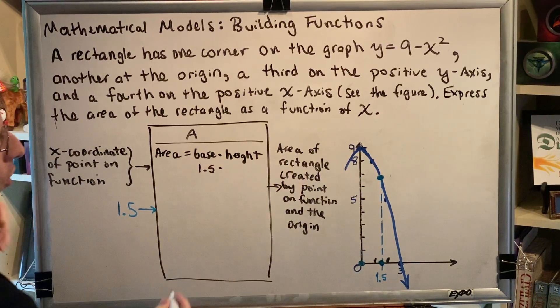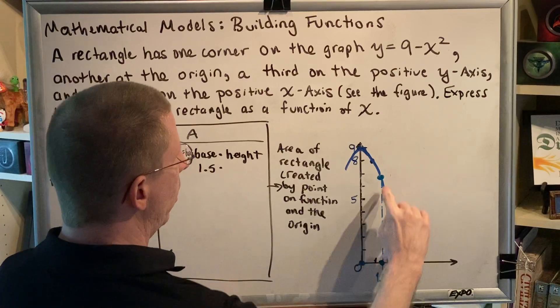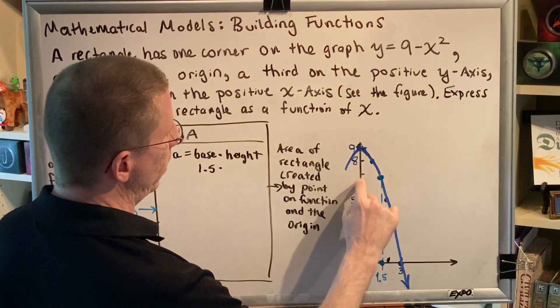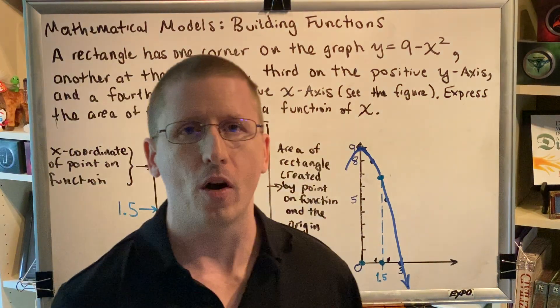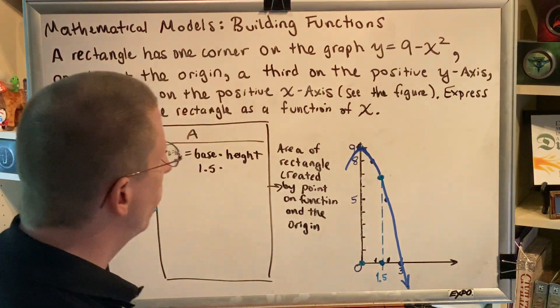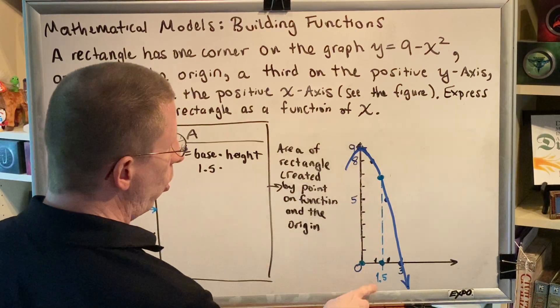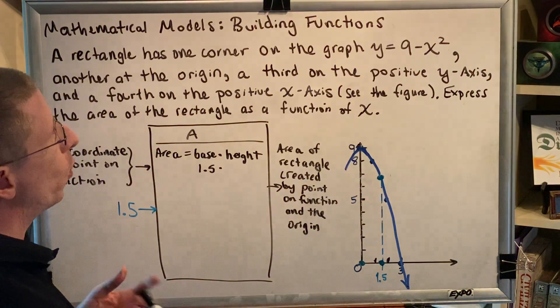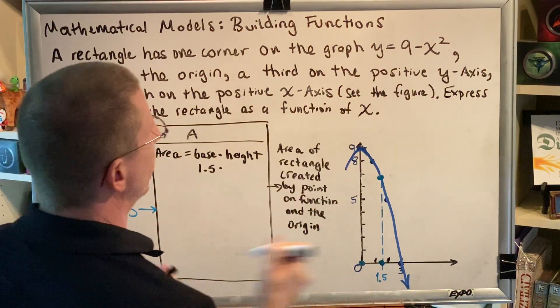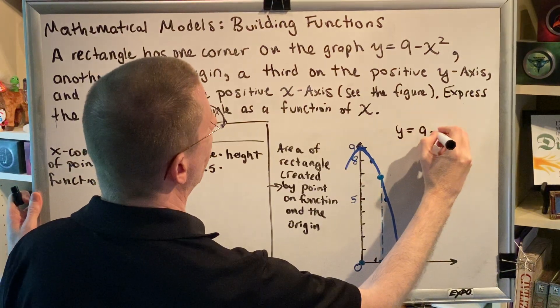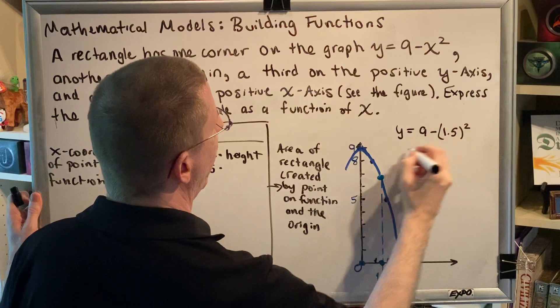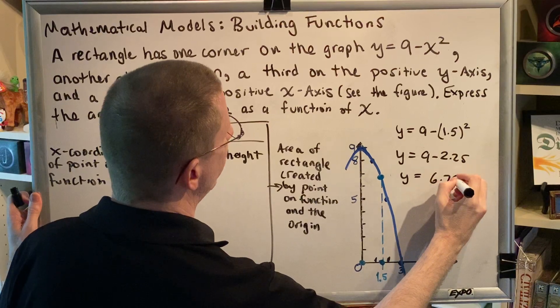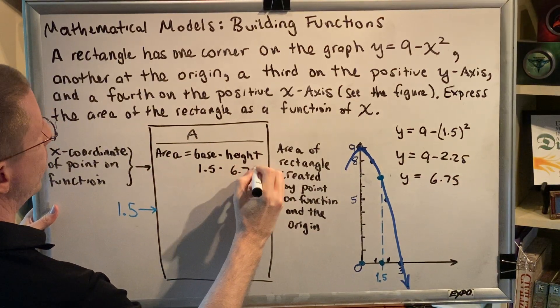Now we need to figure out the height. How high is it from here to here? A computer doesn't have eyes, so it can't simply figure out where this point is—it needs a numerical procedural way. But there's an easy way. We know x is 1.5, and it's on the function y = 9 - x². To find y, just plug in x. So y = 9 - 1.5² = 9 - 2.25 = 6.75. So the height is 6.75.